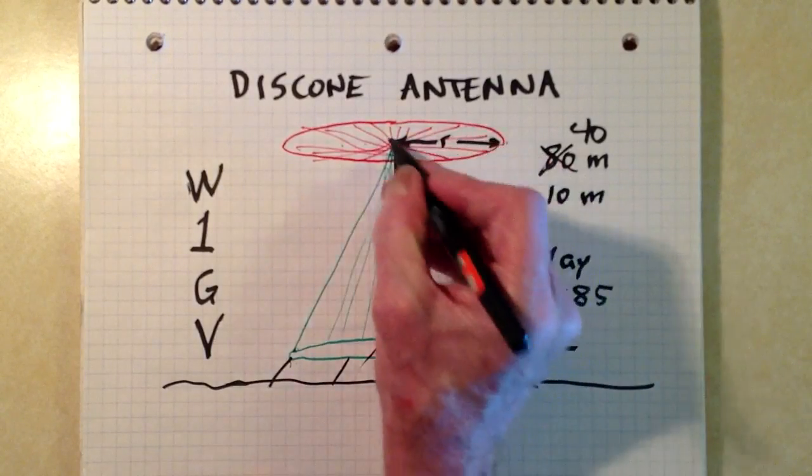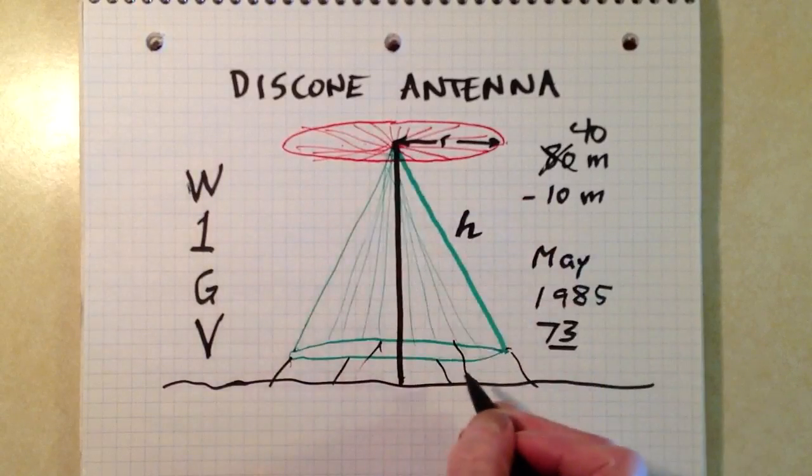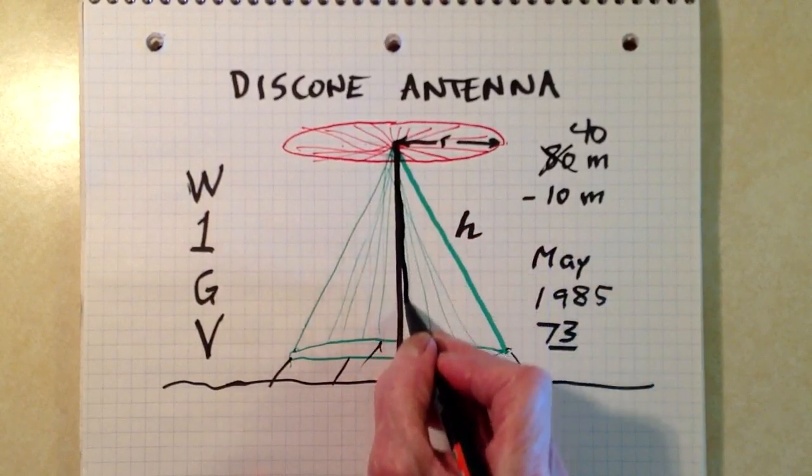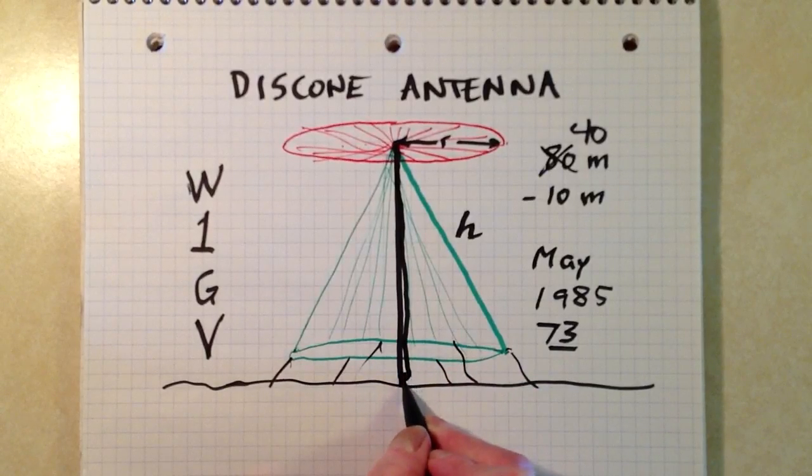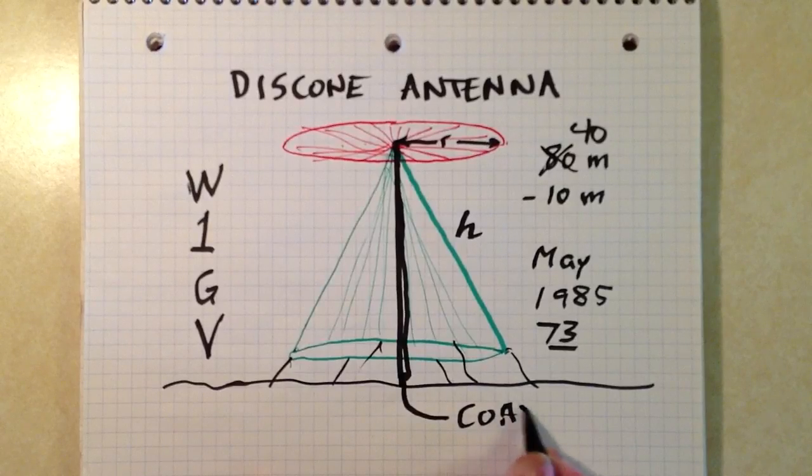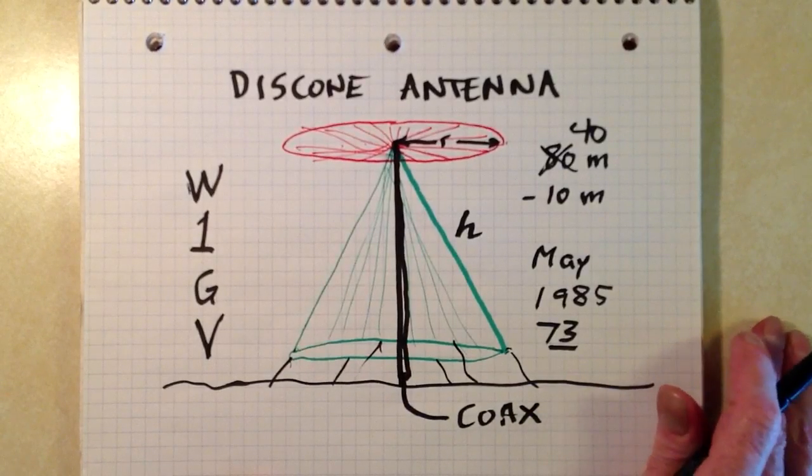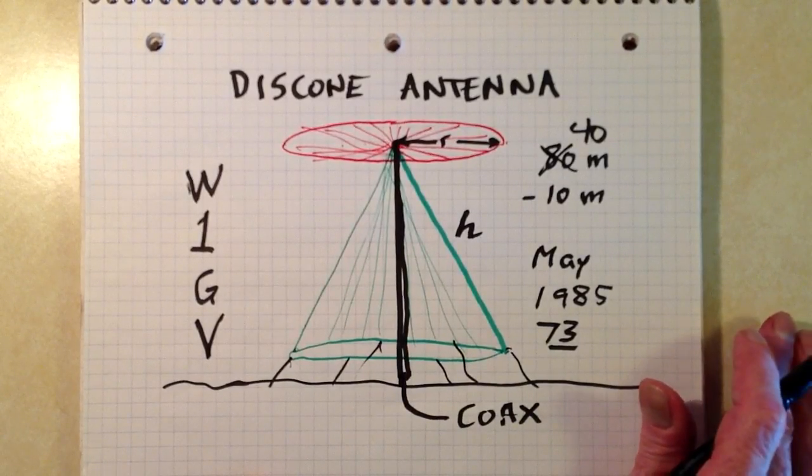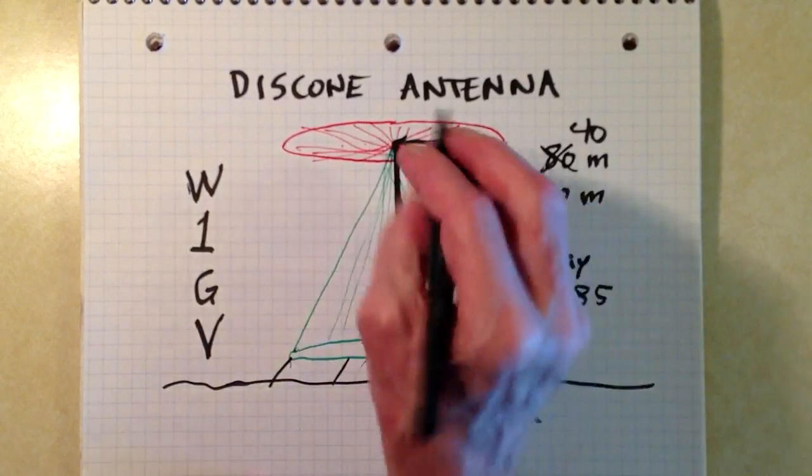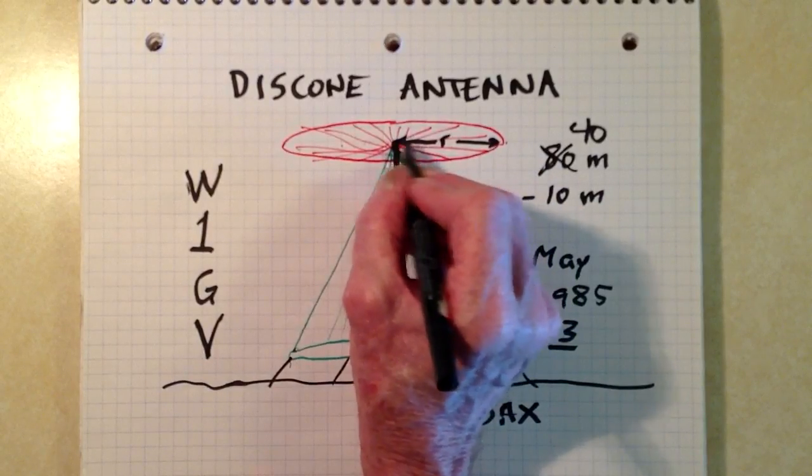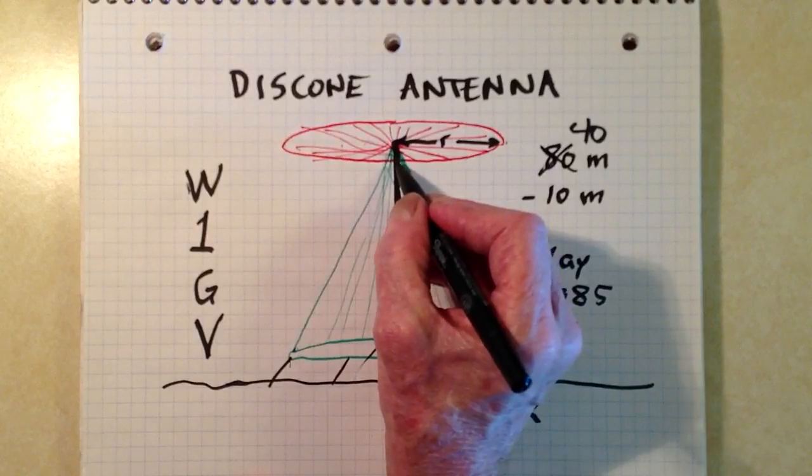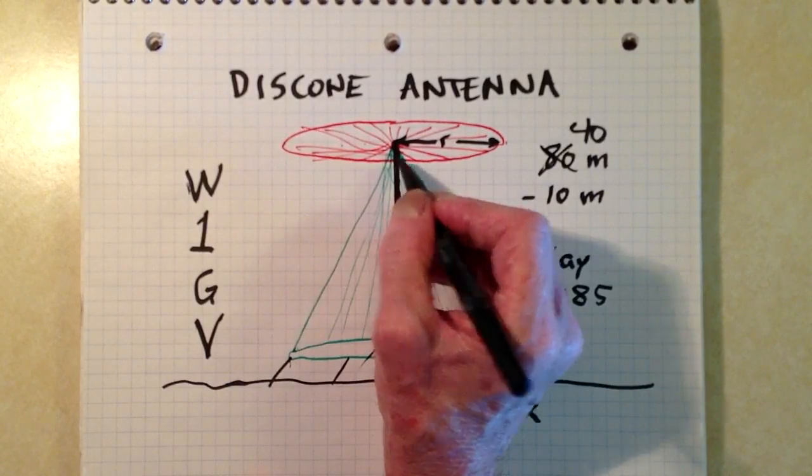When you feed this antenna, you feed it with coaxial cable. You can run it right up the mast, right up your supporting mast like a great big creosoted telephone pole driven into your backyard, thereby winning you the love of your significant other and neighbors forever after. You feed this thing up with coax. You connect the center conductor of the coax to the disc, and the braid of the coax goes to the cone.